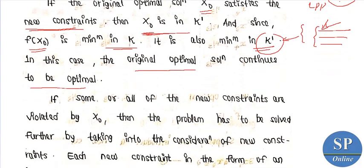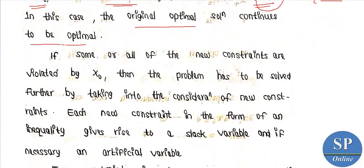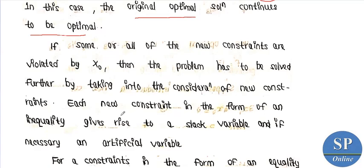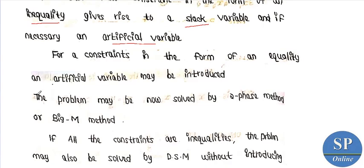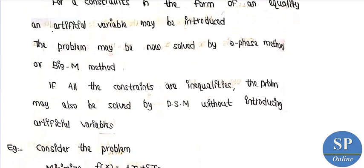If x0 does not satisfy the new constraints, the problem has to be solved further by taking into consideration the new constraints. If the newly introduced constraint is an inequality, we need to add slack or artificial variables. If it is an equality, an artificial variable is introduced. The problem can be solved using the simplex method, two-phase simplex method, or Big-M method. If all constraints are inequalities, the dual simplex method can be used without introducing artificial variables.